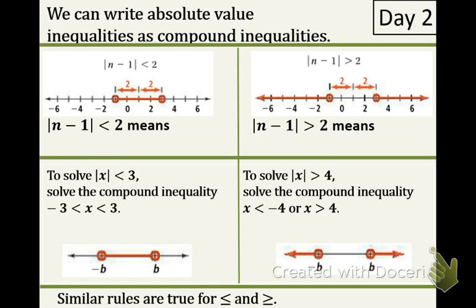This represents all numbers within a distance from 1 that is less than 2 units. So as you can see right here, here's 1, and all these values that are represented in this graph are less than 2 units away from 1.